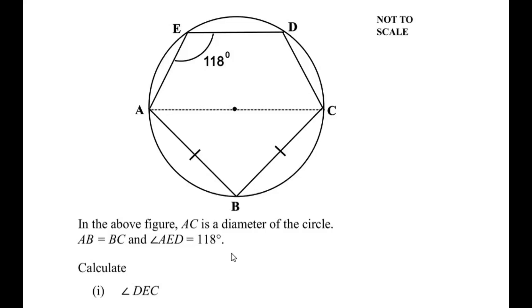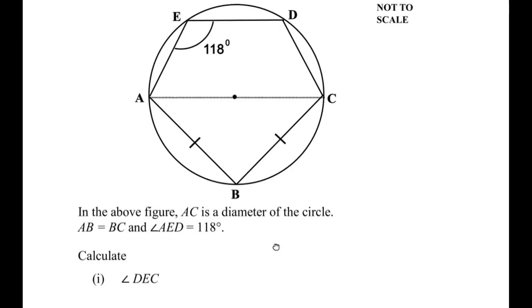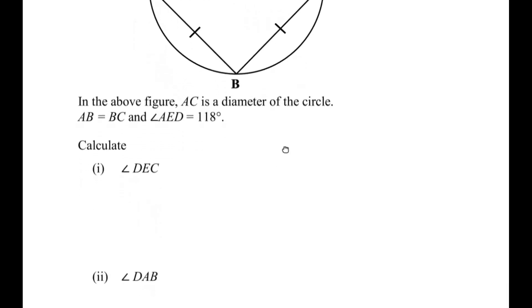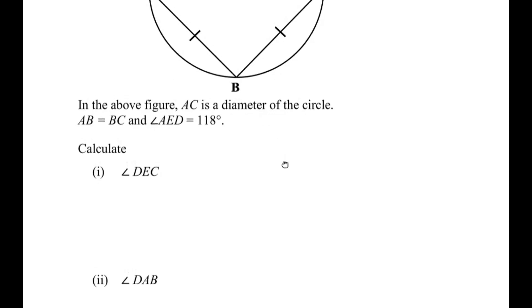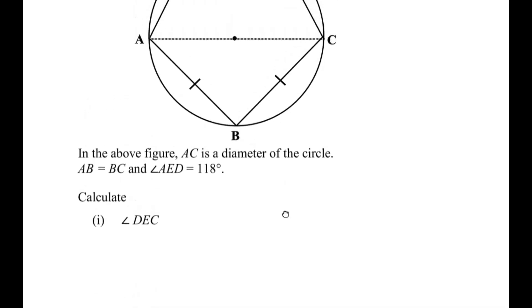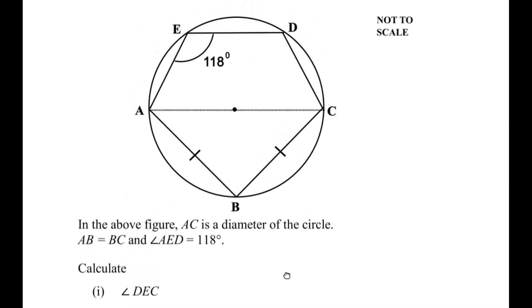Hello and welcome to my channel. In this video we are going to solve an example from circle theorems. In the above figure, AC is a diameter of the circle, AB is equal to BC, and angle AED is equal to 118 degrees. We have to calculate angle DEC and angle DAB — two missing angles.